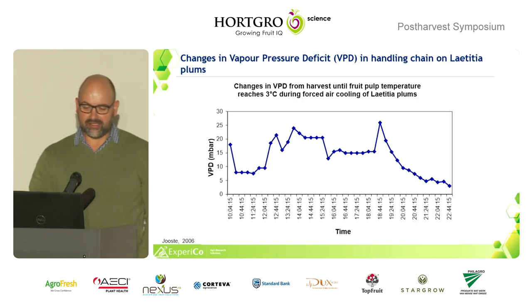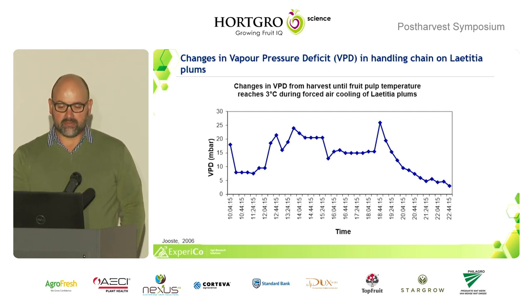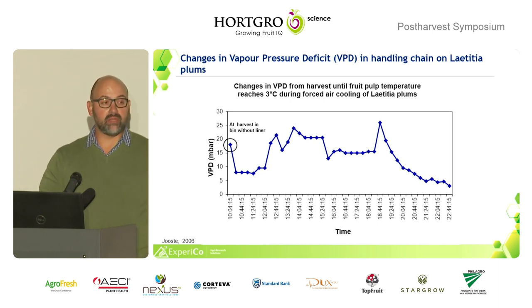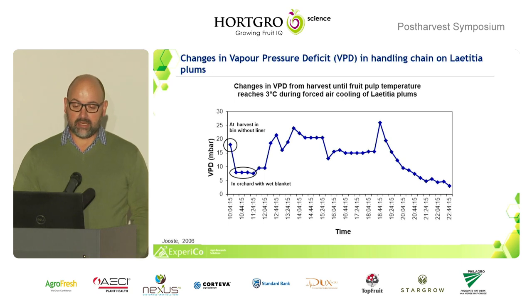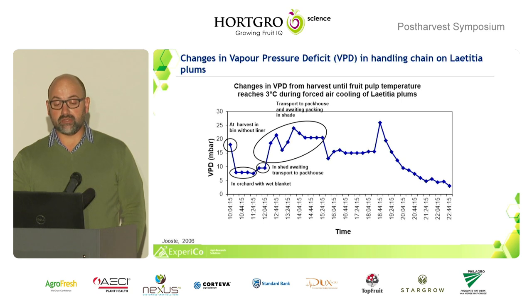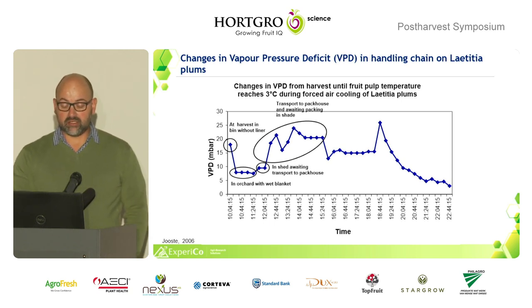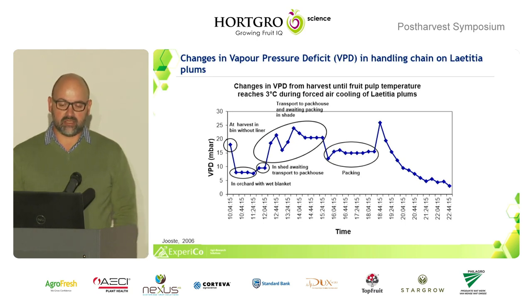Looking at work Marianne did in 2006 on vapor pressure deficit in the handling chain, there are quite a few areas of concern. When harvested fruit sits in a bin in the open, the VPD is on the high side. When a wet blanket is placed on the fruit it reduces by more than half. Then the fruit waits in a shed before transfer to the packhouse, then transport and waiting in the shade — it was quite high again, possibly because the blanket dried out — and in the packhouse itself it's a little lower because it's out of the extreme heat.